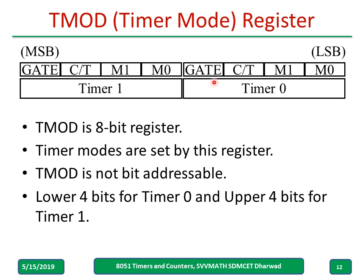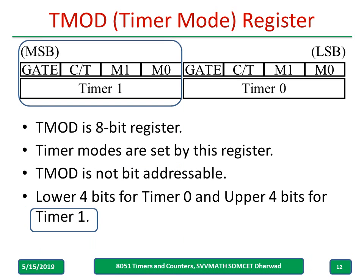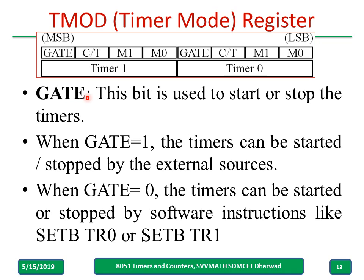The TMOD register has 4 bits for Timer 0 and another 4 bits for Timer 1. Timer modes are set by this register. It has bits M1 and M0, and importantly TMOD is not bit-addressable — the lower 4 bits are for Timer 0 and the upper 4 bits for Timer 1. The GATE bit is used to start or stop the timer. When GATE is 1, the timers can be started and stopped by external sources. When GATE is 0, the timers are started and stopped by software instructions such as SETB TR0 or SETB TR1, which is what we use most of the time in programming.